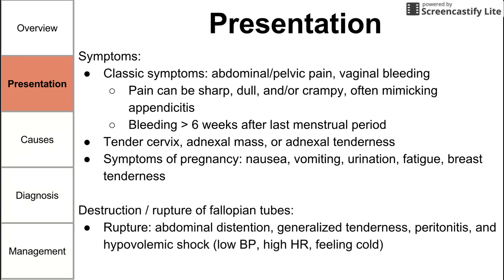Another sign is destruction or rupture of the fallopian tube. If there's a rupture of the fallopian tube, you might get peritonitis, abdominal distension, and generalized tenderness. If there is a lot of blood loss into the peritoneum or outside the body through the vagina, you might also get hypovolemic shock, with symptoms including low blood pressure, high heart rate, and a cold feeling.